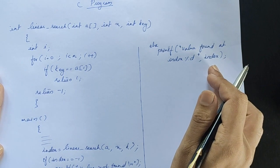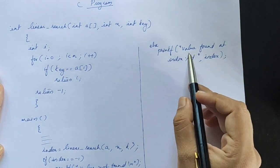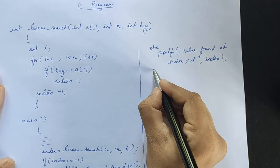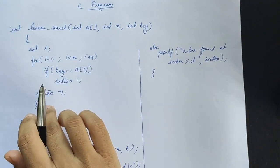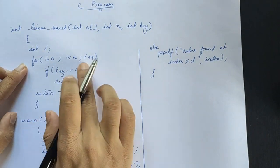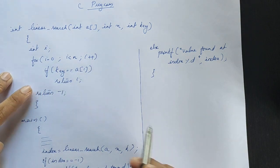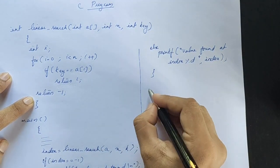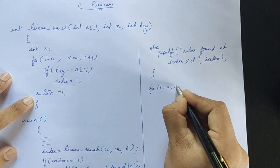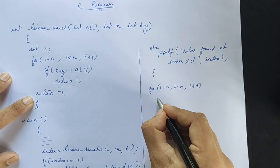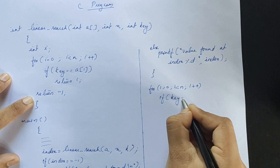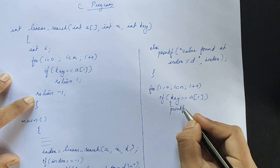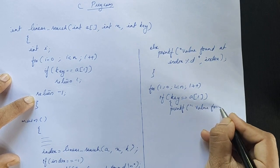If index is equal to 0, print value found at position %d. Okay, then print value found. Value found at index i.